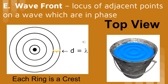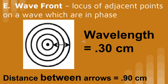When we look at a transverse wave from above, we see a series of rings. Each ring is a crest, and between each ring is the trough of the wave. The distance between consecutive rings is equal to one wavelength. In this picture, we see that the distance between three rings is 0.90 cm, which means that the wavelength of this wave is 0.30 cm.